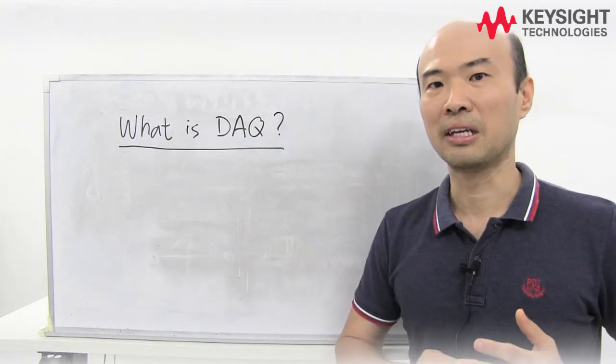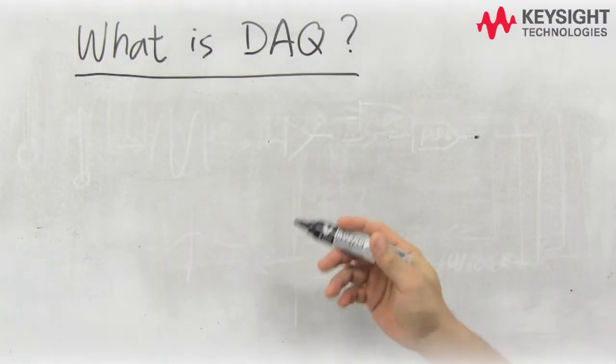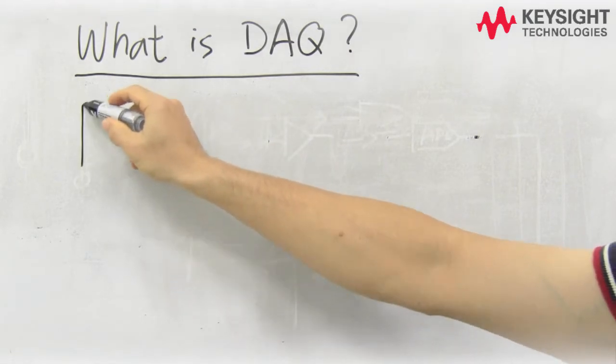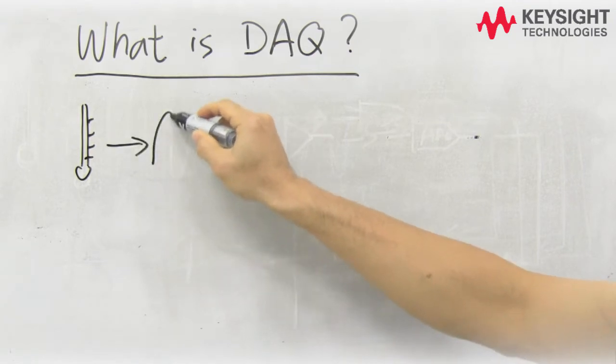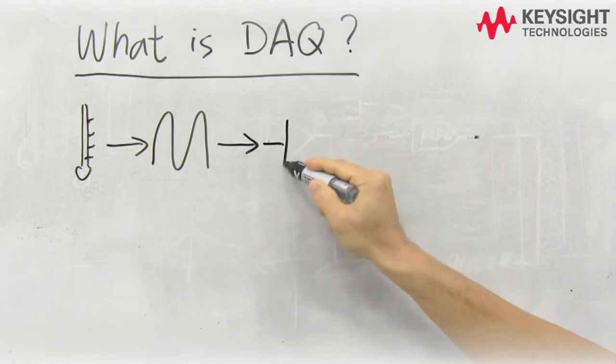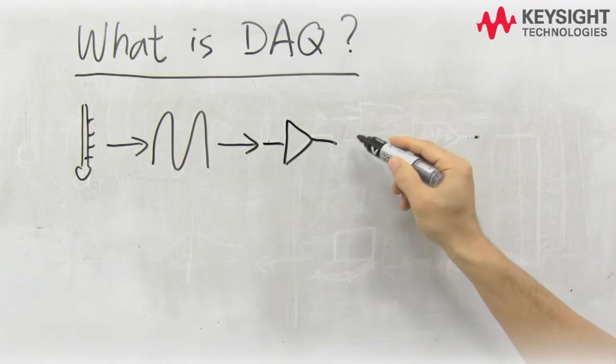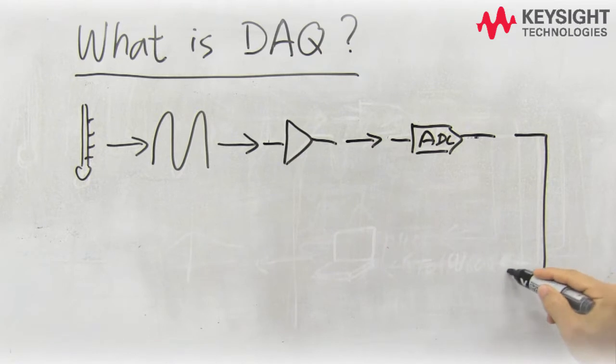First, what's data acquisition and what does it do? Let's say we want to do data acquisition on temperature. DAQs will generally use a temperature sensor to convert the temperature into an electrical signal. The electrical signal will be sent to a conditioning circuit where noise will be removed and the signal adjusted so it's easier to work with. Once that's done, the signal will be sent to an ADC or analog-to-digital converter where it will be converted to a digital signal.